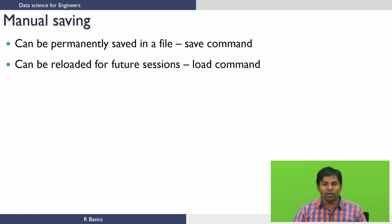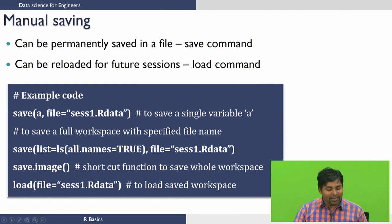You can also save the workspace information using the manual method, where you can save the information to a file using the save command, and the saved information can be reloaded for future sessions using the load command. Let us see how to do that in R. Here's an example code. The first line here shows how to save a variable that is there in the workspace into a file named sess1.Rdata.